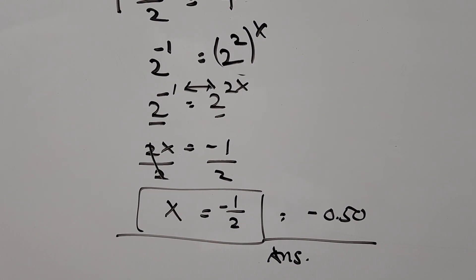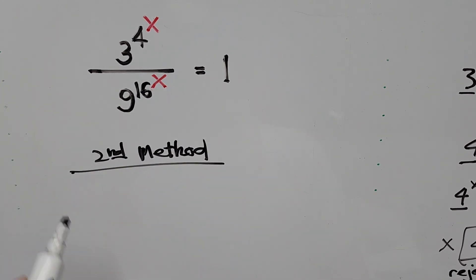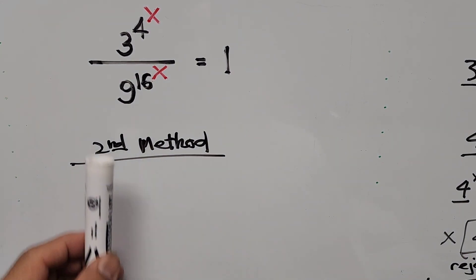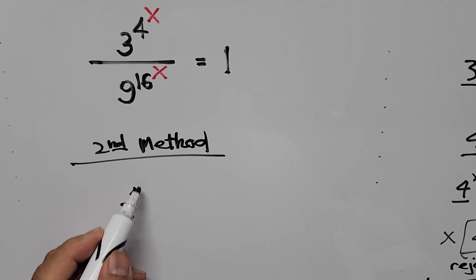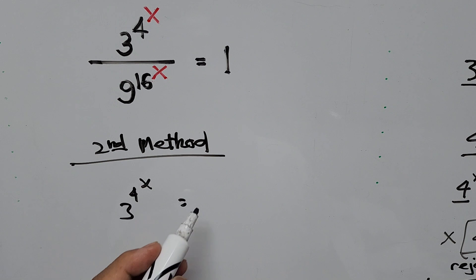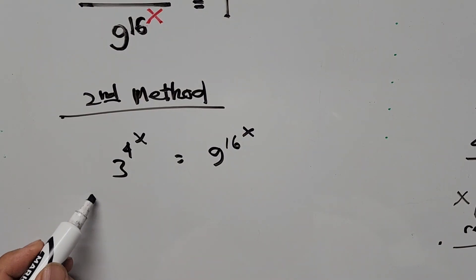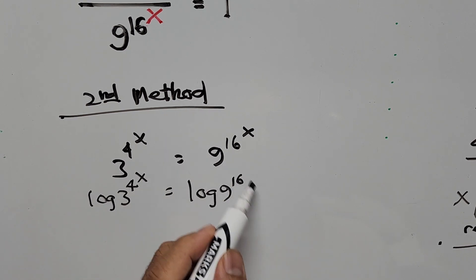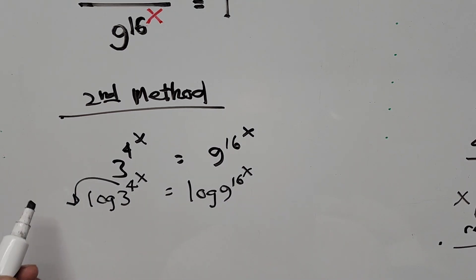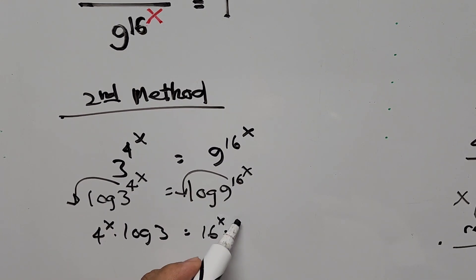Now let's do the second method using logarithms. We transpose the denominator to the right-hand side, giving 3 to the power of 4 to the power of x equals 9 to the power of 16 to the power of x. Taking the logarithm of both sides and applying the power rule, we get 4 to the power of x times log 3 equals 16 to the power of x times log 9.